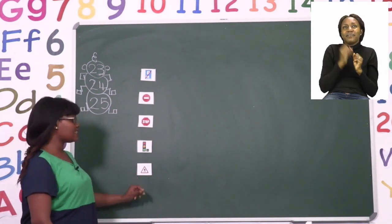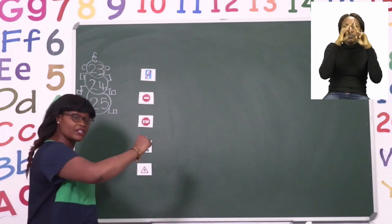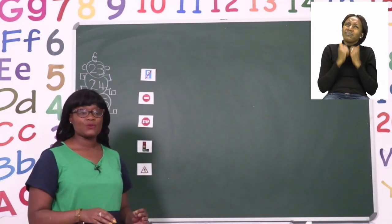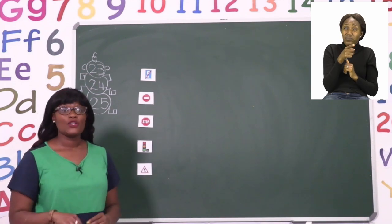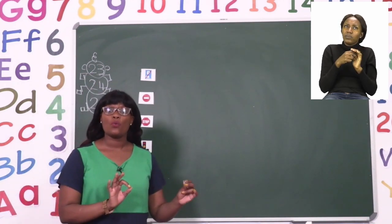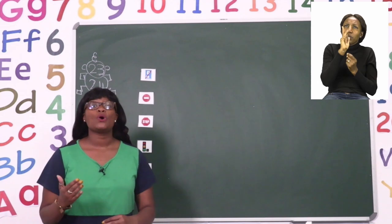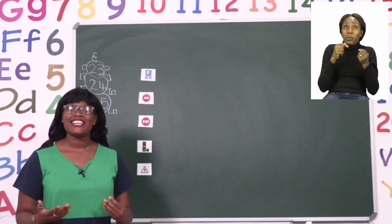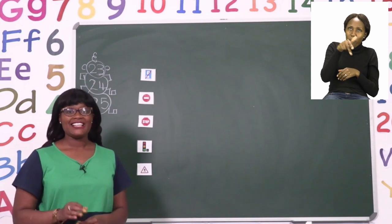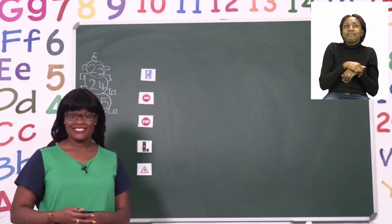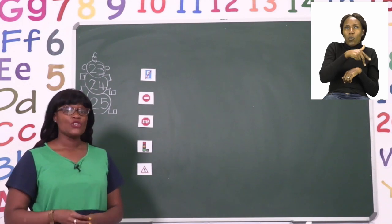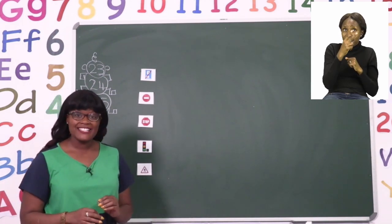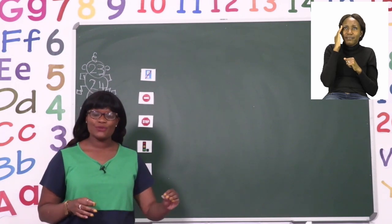The last sign is a triangle with someone walking. This one is very important because it tells you that you are going to meet people who are walking, and people walking across the road are called pedestrians. Let's say that word: pedestrians. Well done. So if you see this little triangle sign, it is telling us that it is time to walk.